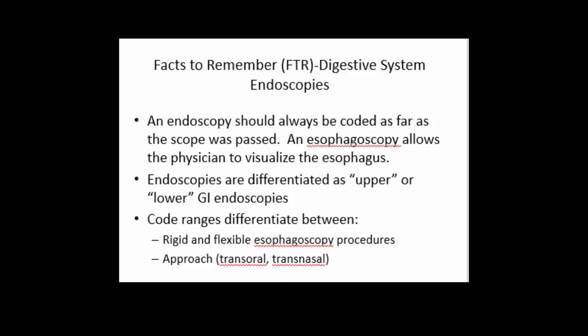An endoscopy should always be coded as far as the scope was passed. When you are reading your operative report, the surgeon is going to dictate how far he or she advanced the scope into the digestive system. There are upper and lower endoscopies, differentiated between whether they were rigid or flexible — referring to the scope itself and the approach, meaning how the physician got the scope into the body.